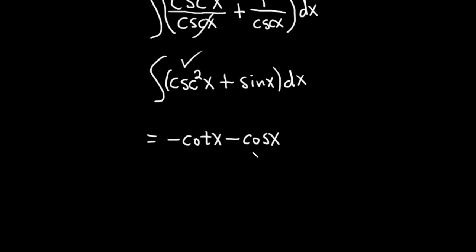The derivative of cosine is negative sine, but we already have a negative here. Two negatives become a positive. So all is good. And plus c, which is our constant of integration. And so that would be the final answer.